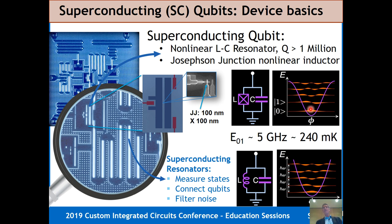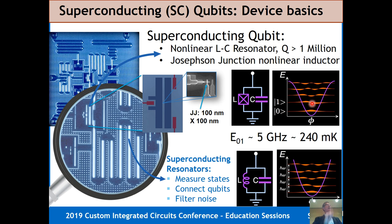The cool thing about a qubit is: the minute it absorbs one photon, the energy changes — and it doesn't absorb any more because the non-linearity makes the next level a different frequency. It's a self-limiting thing. Atoms work the same way — their energy levels are all different. It's the non-linearity of the Josephson junction that gives the superconducting qubit well-defined states. The frequency is about 5 GHz, proportional to kT of about 240 millikelvin — which is why we need to be cold.